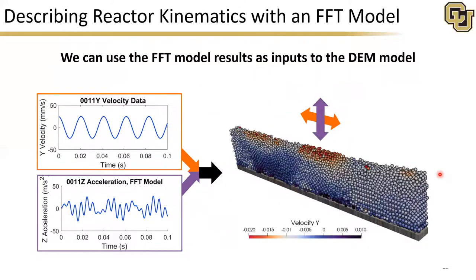We treat the y data as a fluctuating wall y velocity and the z data as a fluctuating gravitational acceleration, which avoids the computational complexities of physically having to move the mesh up and down in the z direction.